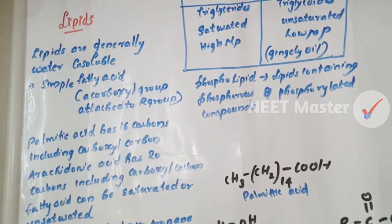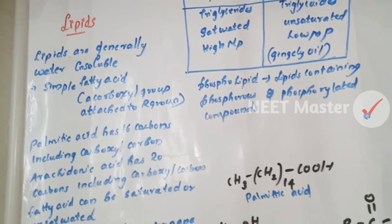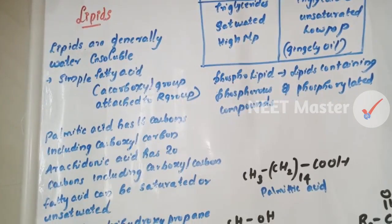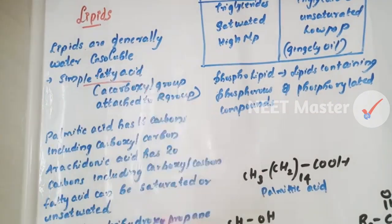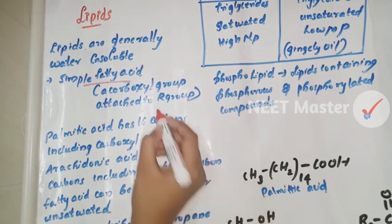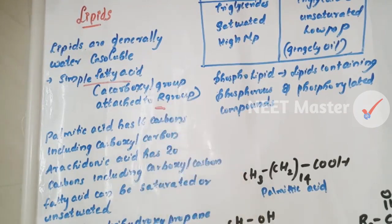What are lipids? Generally, lipids are not soluble in water. Lipids are simple fatty acids. These lipids are called fatty acids, where a carboxylic group is attached to an R group.